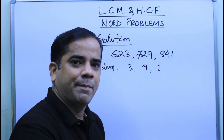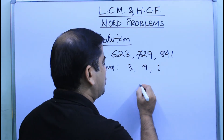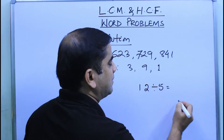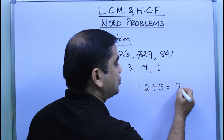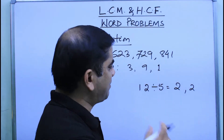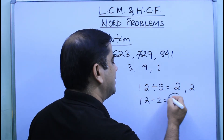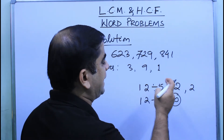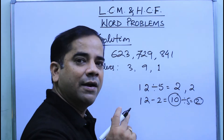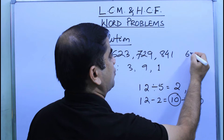Let us take an example to understand this better. Suppose I divide 12 by 5 — I get quotient 2 and remainder 2, since 5 twos are 10 and remainder is 2. That means if 2 is subtracted from 12, the number we get — which is 10 — will be completely divisible by 5.